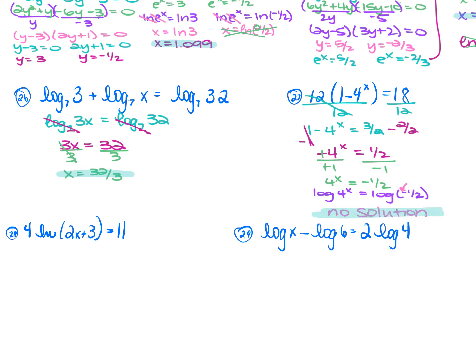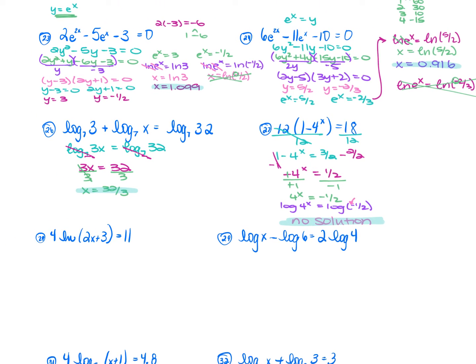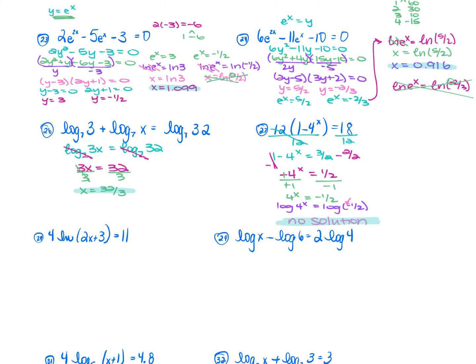Any time you are taking the log or LN of a negative number, there is no solution — you can't do it. That's why in numbers 23 and 24, we crossed out the cases with ln(−1/2) and ln(−2/3). Even if you try it on your calculator, it will give you an error.